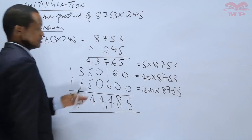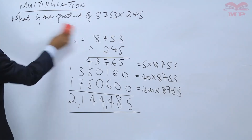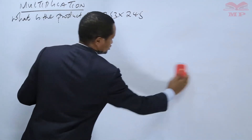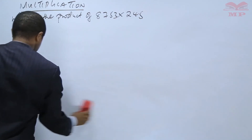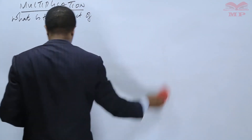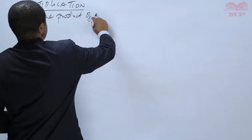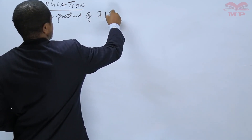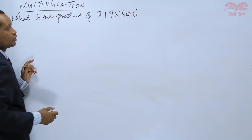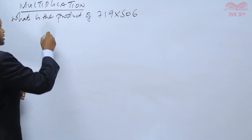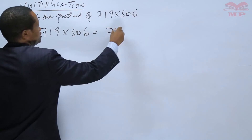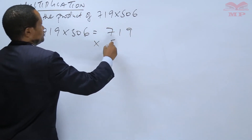Learner, do you understand multiplication? Let us have another example before I give you an opportunity to exercise on your own. We will work together. The product is what you get when you multiply two numbers. So 719 times 506 — what is the product?